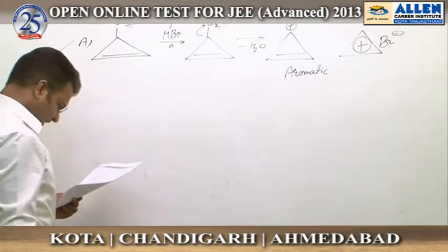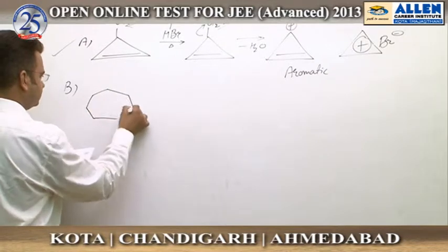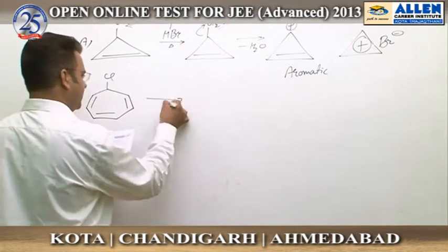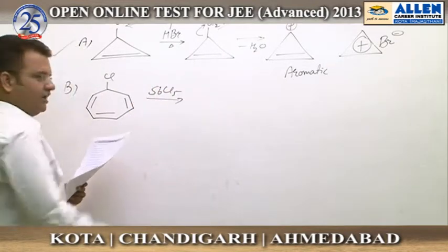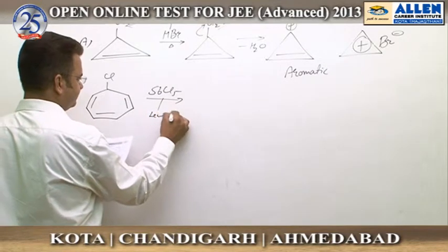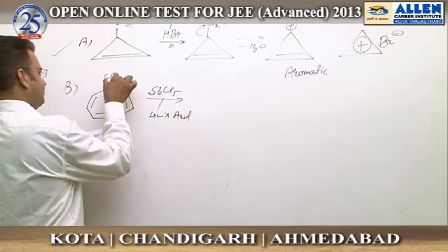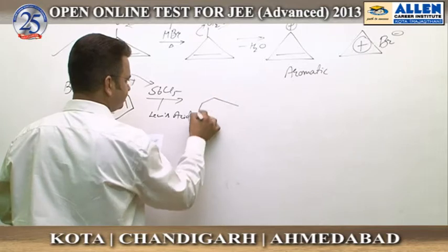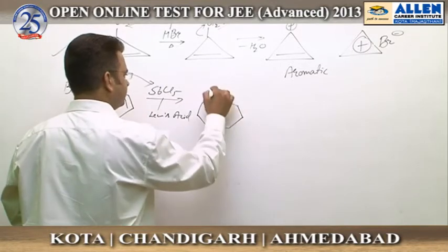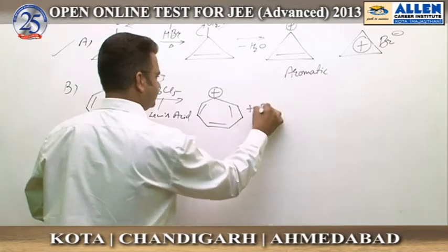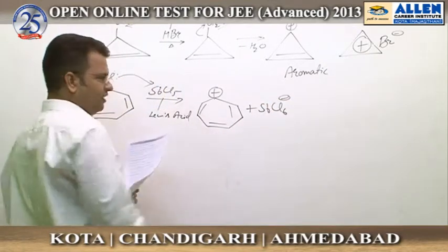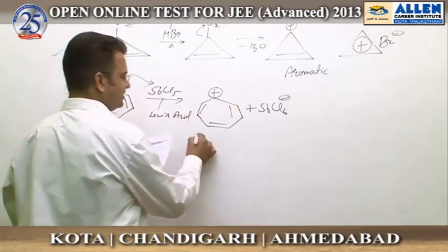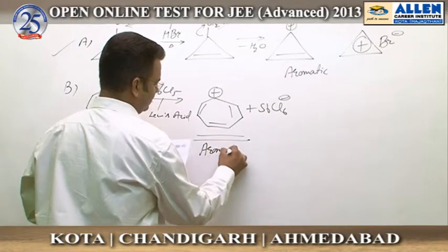For option B, if you analyze: Cl treated with Lewis acid SbCl₅ — it is a Lewis acid. The Lewis acid will accept the electron pair from chlorine, which will go out from this place forming SbCl₆⁻. These two will exist in ionic linkage — ionic association — and this is an aromatic species.